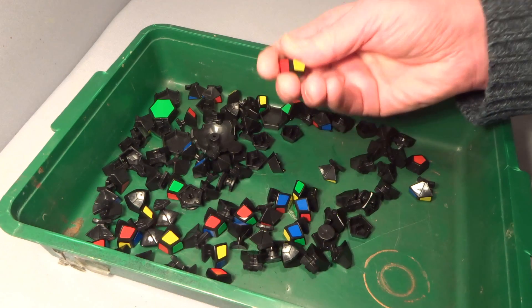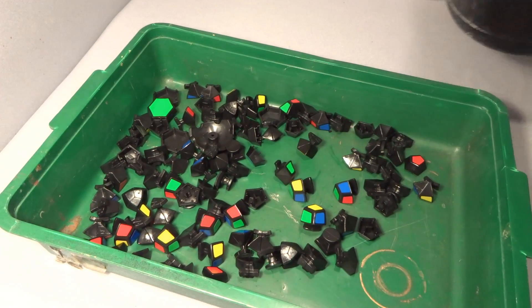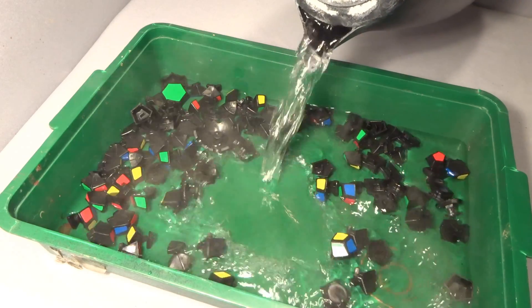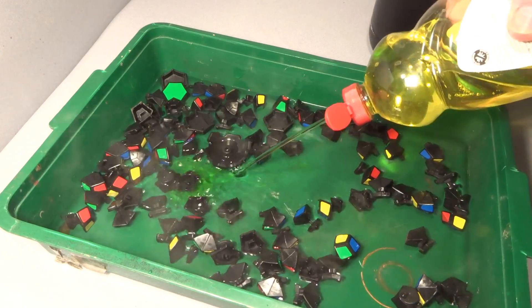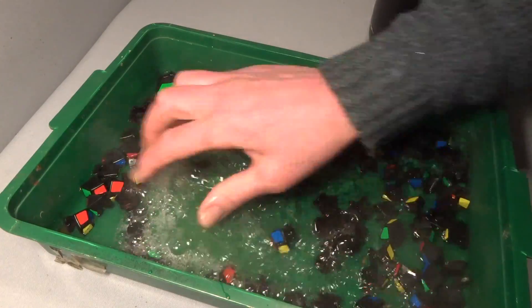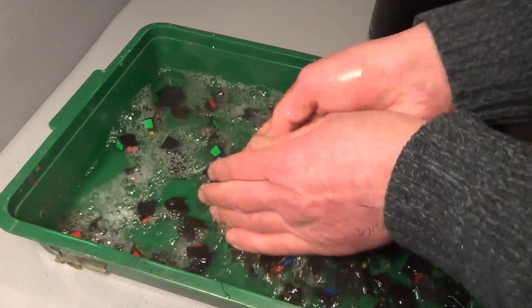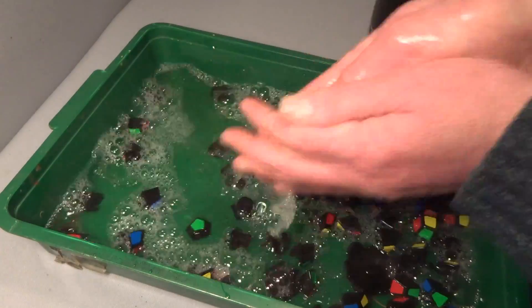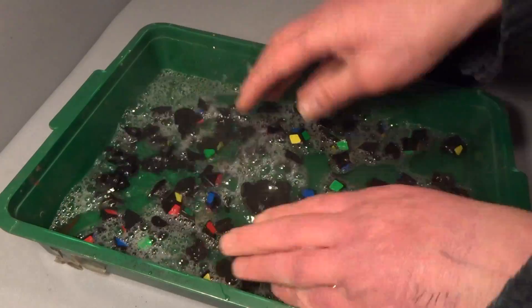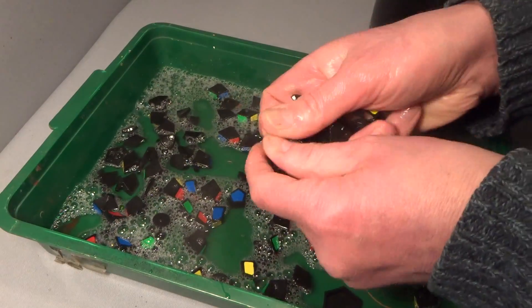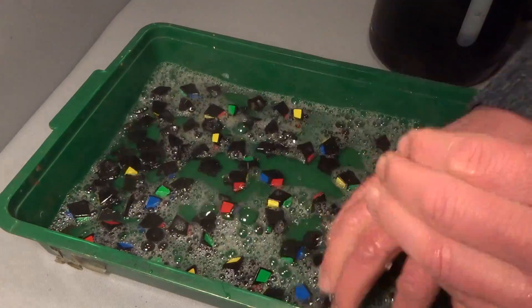So the way to de-grease a puzzle like this is to pour on some warm water, a bit of fairy liquid or washing up liquid, any sort of washing up liquid. The problem with doing this is the pieces are hollow, so the water's going to go inside, so you really can't be in any rush to use it.